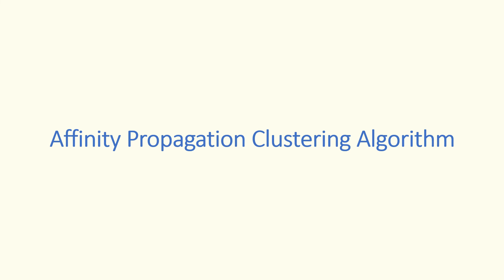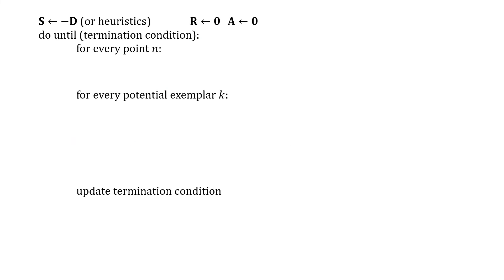Now let's look at the complete algorithm. This do loop here is the main body of the algorithm, and this is the initialization. So S is initialized to negative of D, or one can use heuristics for the diagonal elements of the similarity matrix S.